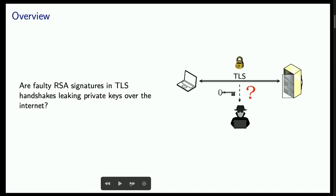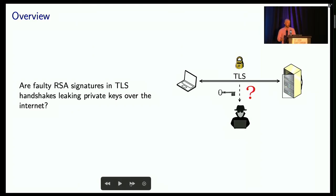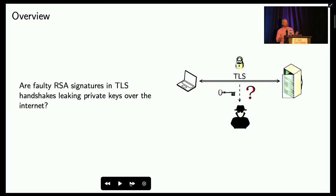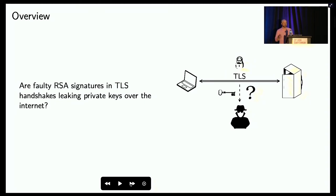In this work, we're interested in RSA signatures in TLS — specifically whether faulty RSA signatures are capable of leaking private keys in the wild. TLS is used to establish secure connections between clients and servers, and during the handshake process, RSA signing is used to authenticate the identity of different hosts.